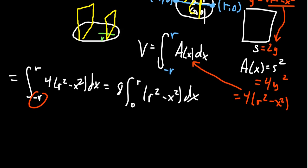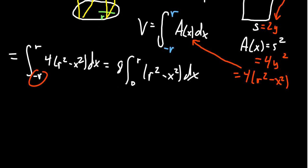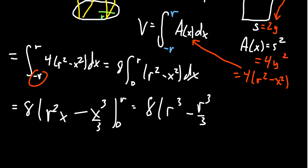Now be aware that x is our variable, r is a constant, just an unspecified constant. So as we integrate, the antiderivative of r² is going to be r²x. Make sure you don't say r³/3. We're not taking the integral with respect to r. We're taking it with respect to x. On the other hand, the antiderivative of x² will be x³/3. And we plug in 0 and r. And so when you plug that in, you're going to get r³ - r³/3.